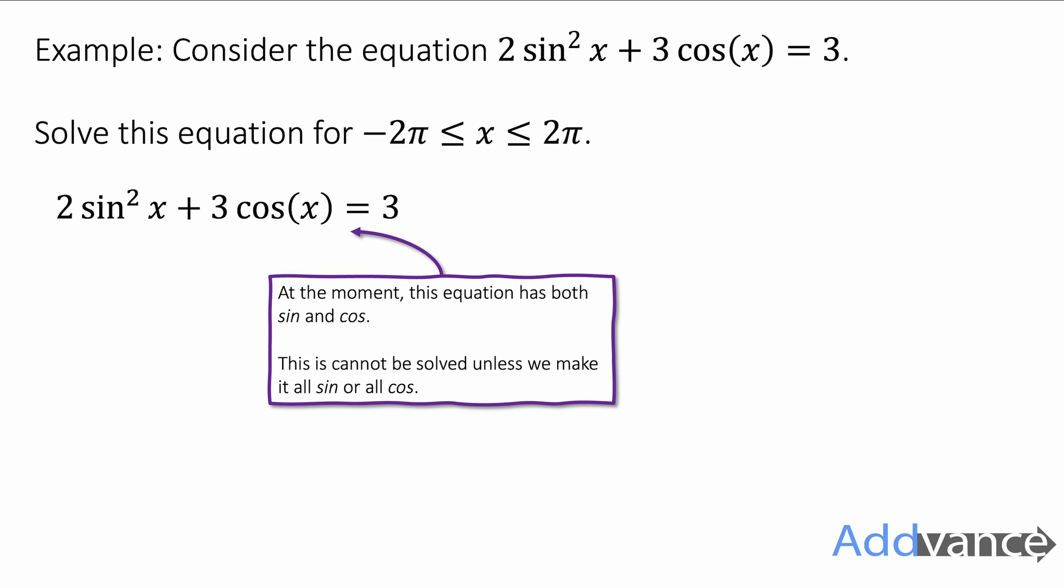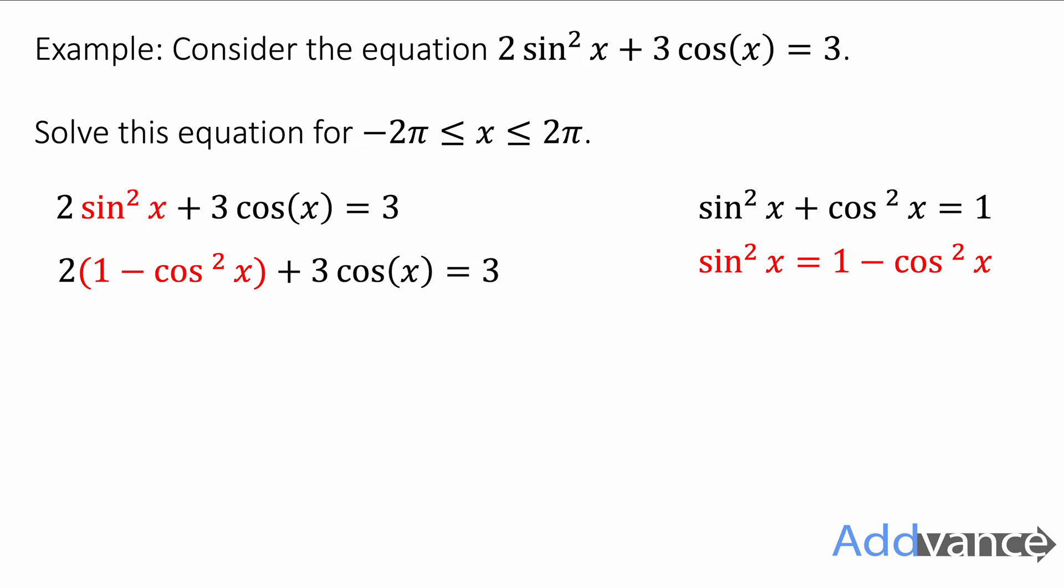At the moment this equation has both sin and cos in it and that makes it complicated, but what we should do is replace the sin² x with an equation for cos because that will mean the equation only has cos in it. I'm immediately thinking of the Pythagorean identity sin² x + cos² x = 1 because that links sine squared and cos squared really nicely. Move the cos squared to the other side and now we have sin² x = 1 - cos² x. We can substitute it in, expand the brackets, and what we've done so far is replace the sin² x with cos² x, so now our equation only has cos in it and that makes it far easier to solve.